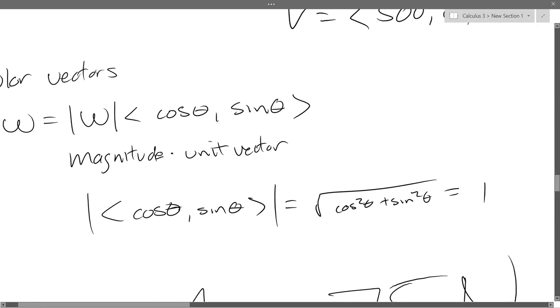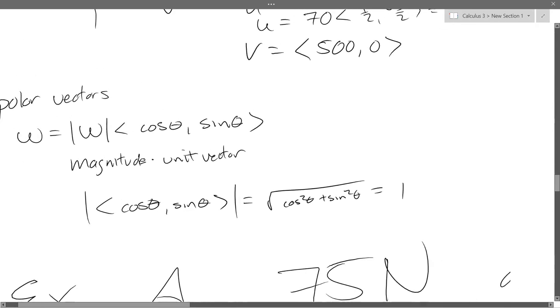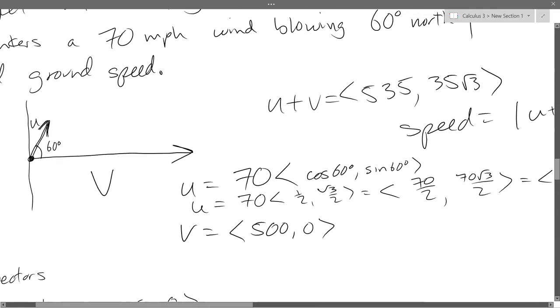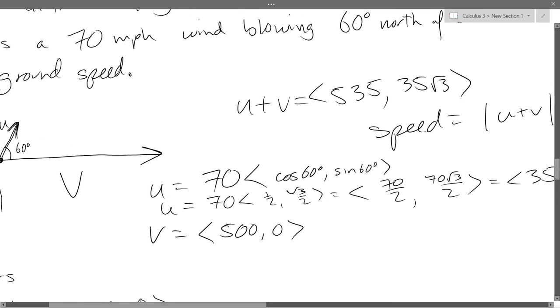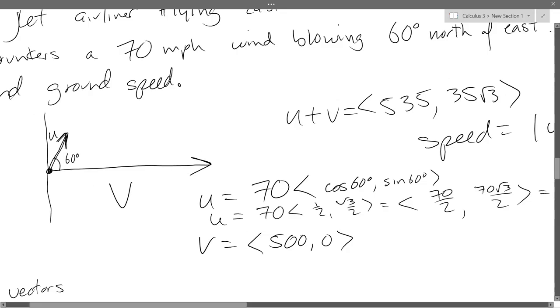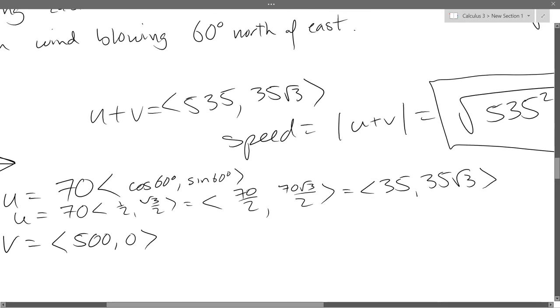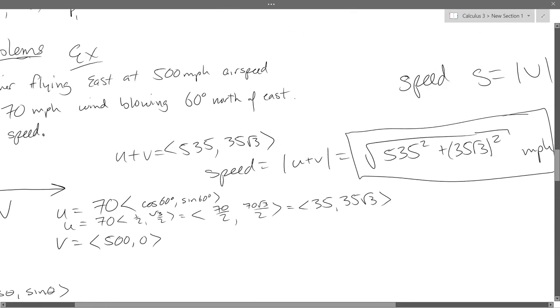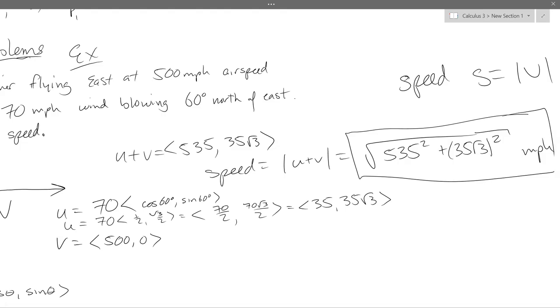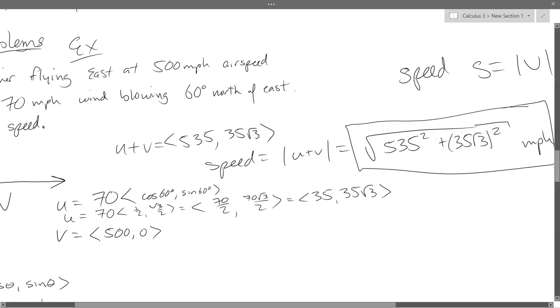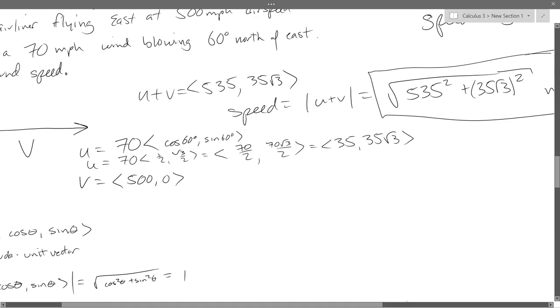So polar form of vectors is magnitude of your vector times cos theta, sine theta. This is always going to be a unit vector. Magnitude of cos theta sine theta is always going to be 1, regardless of theta. So our easy vector V is 500, 0. And then the more difficult one has magnitude 70 times cos 60, sine 60. We carefully just added those two together. There's all of our work.